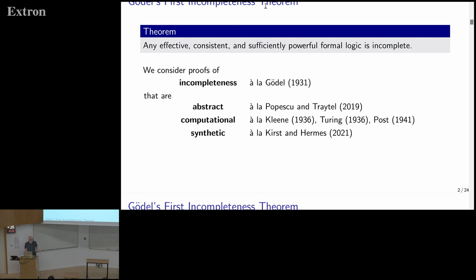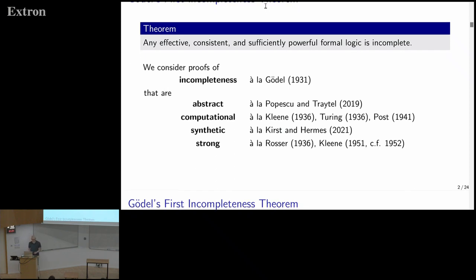When attempting to formalize these proofs using computability theory, working with a concrete model of computation can get quite annoying. We've already heard talks yesterday that used synthetic computability to formalize results in computability theory, and we're going to do this again today, which allows us to remove all of the tedium. Something similar with relation to the incompleteness theorems has already been done by Kirst and Thomas.